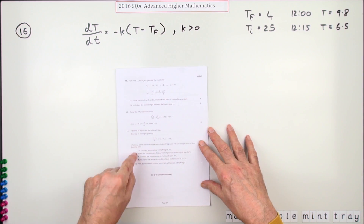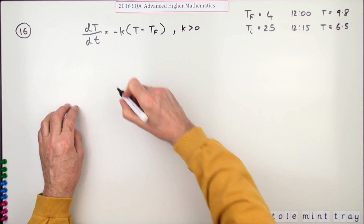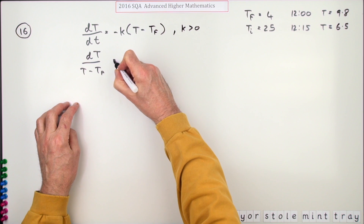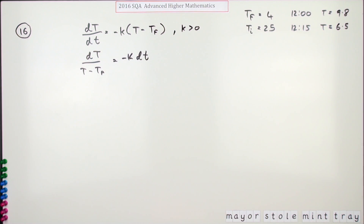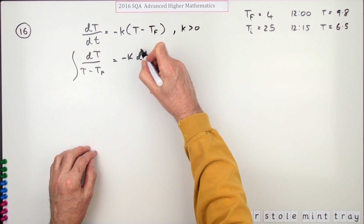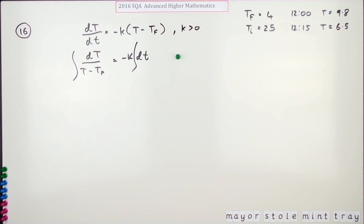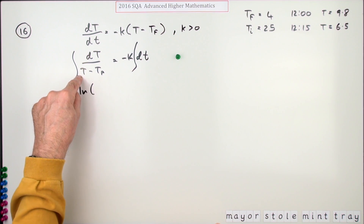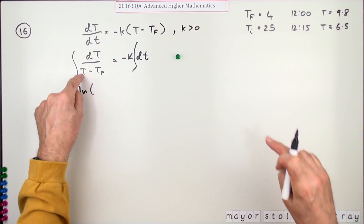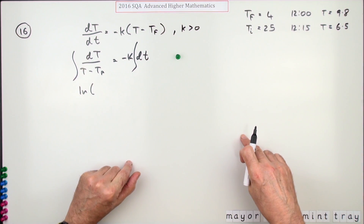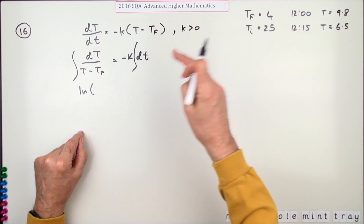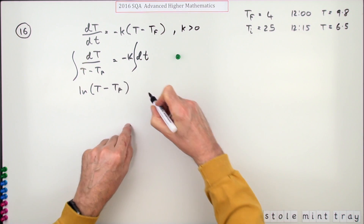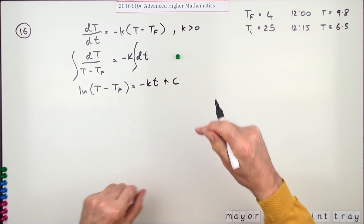The first approach is to just integrate this directly. Put the temperatures on one side with dT, and the dt on the other side, and integrate both sides. Integrating gives ln of (T minus T_f). The temperature T is always going to be greater than T_f - the fridge temperature - so this is never going to be negative, so I don't need a modulus. That equals negative kt plus c. Integrating it to that form gets you a mark.